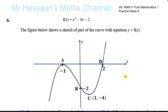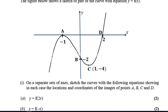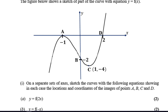Question number six from the practice paper, international A-level P1 paper one. We have a graph of a curve with equation y equals f of x — a cubic curve. The figure shows a sketch of part of the curve. We can see where it crosses the y-axis, the x-axis, and where it turns. On separate sets of axes, sketch the curves with the following equations, showing the locations and coordinates of the images of points A, B, C, and D — the intercepts and the turning point.